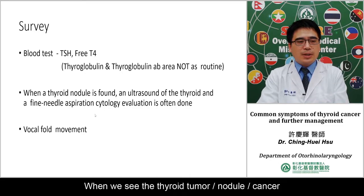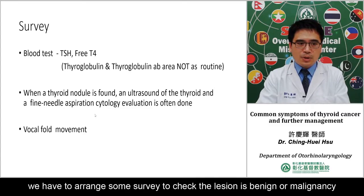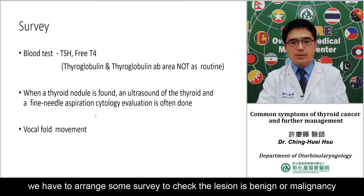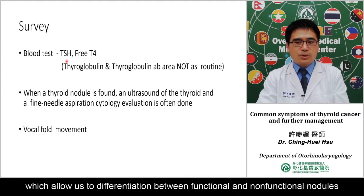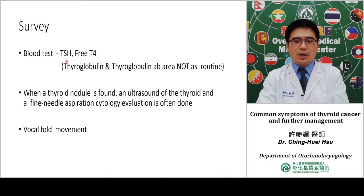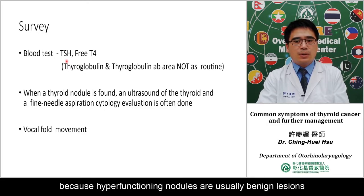When we see a thyroid tumor or thyroid nodule, we need to determine whether the lesion is benign or malignant. First, I suggest doing a blood test to measure the TSH level, which allows us to differentiate between functional and non-functional nodules. This is important because hyperfunctional nodules are usually benign lesions.